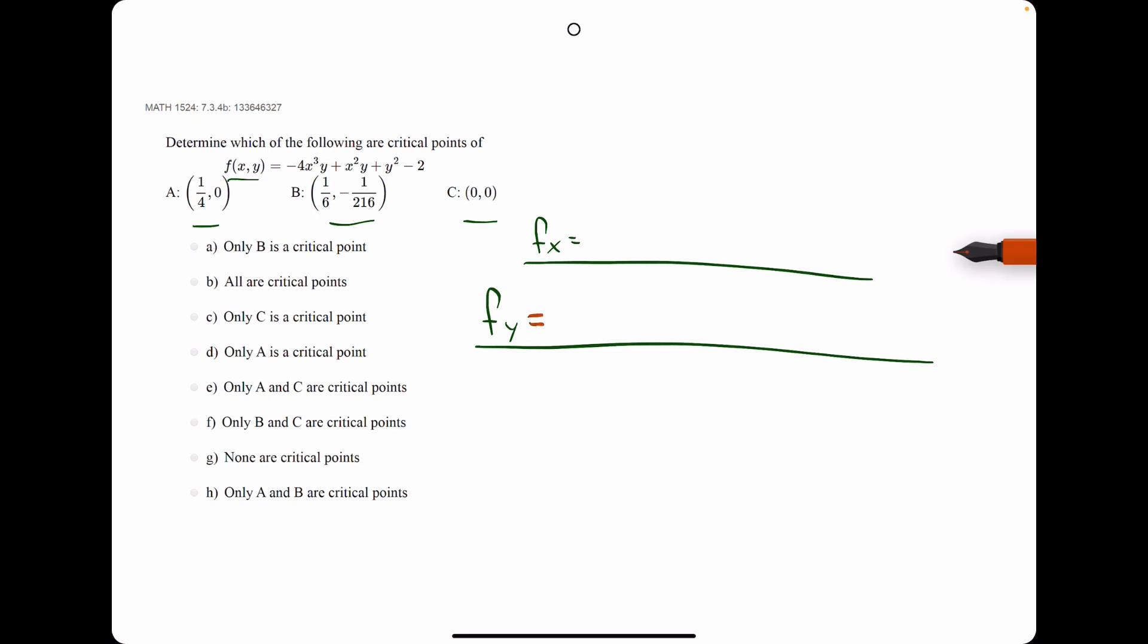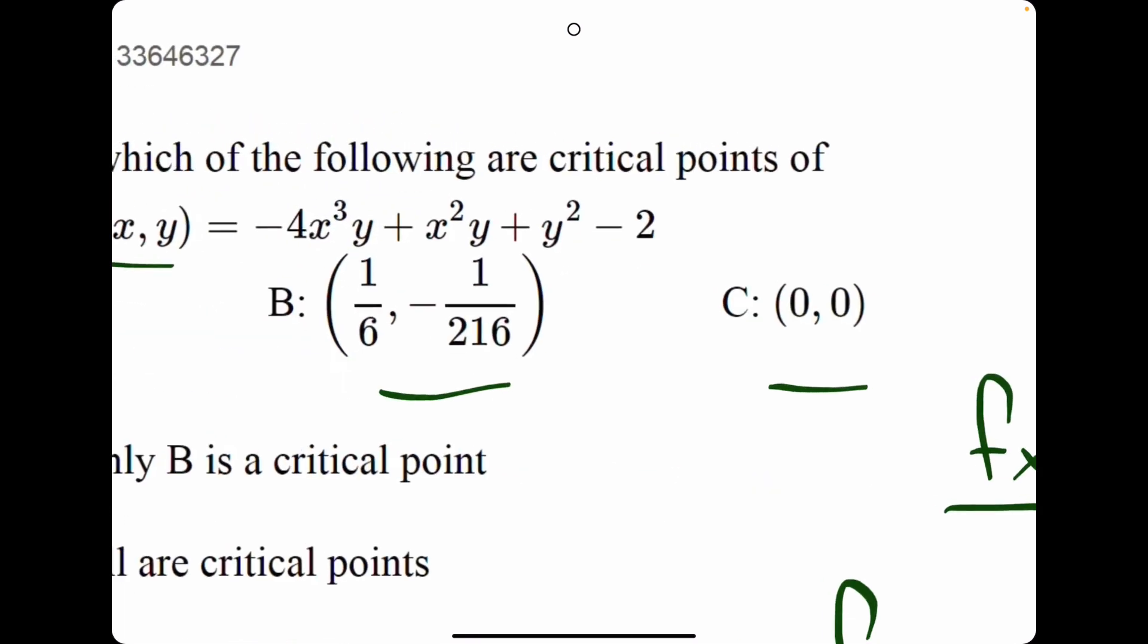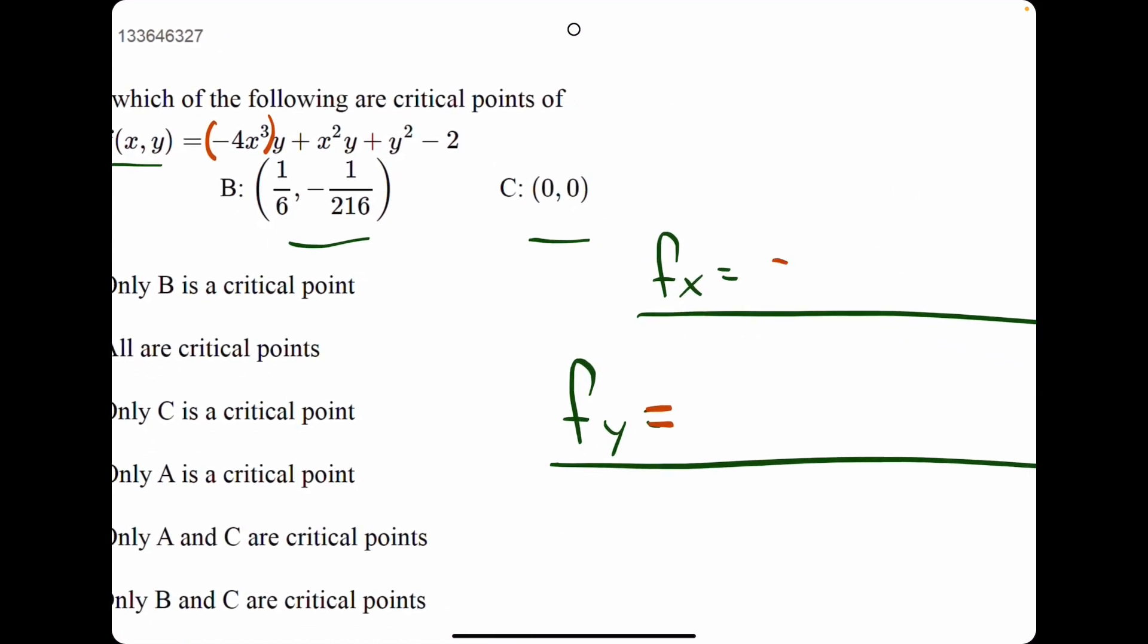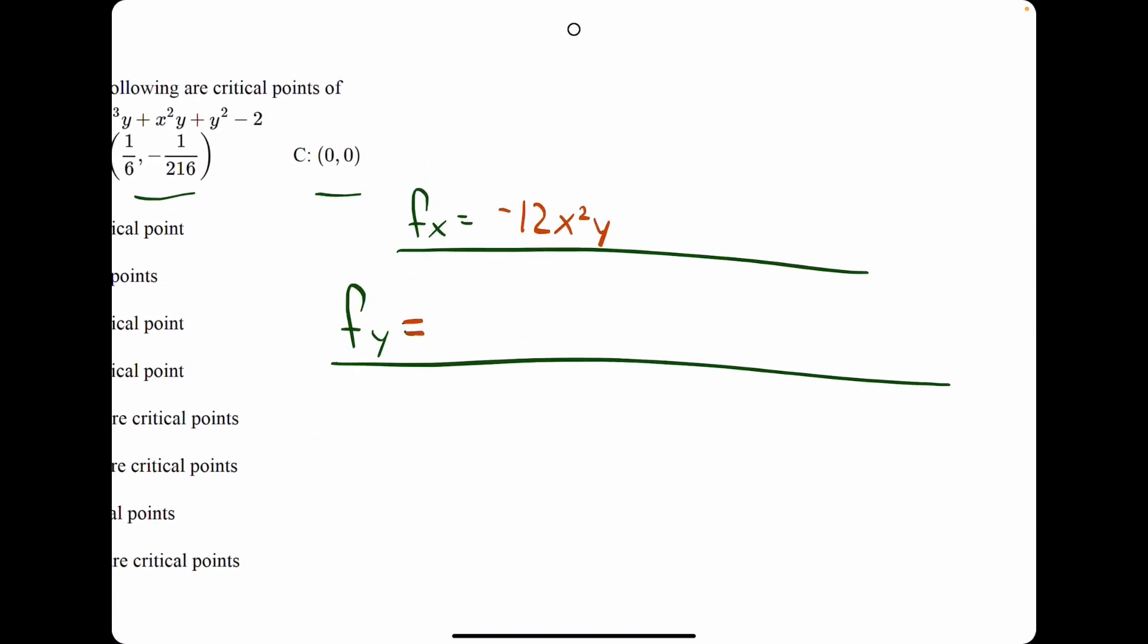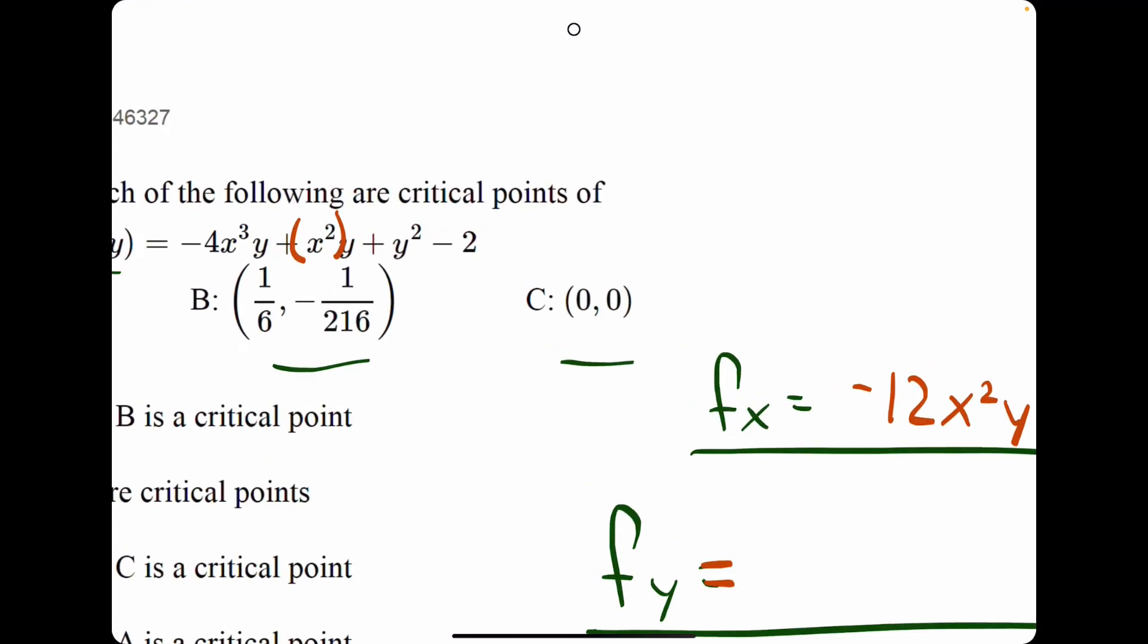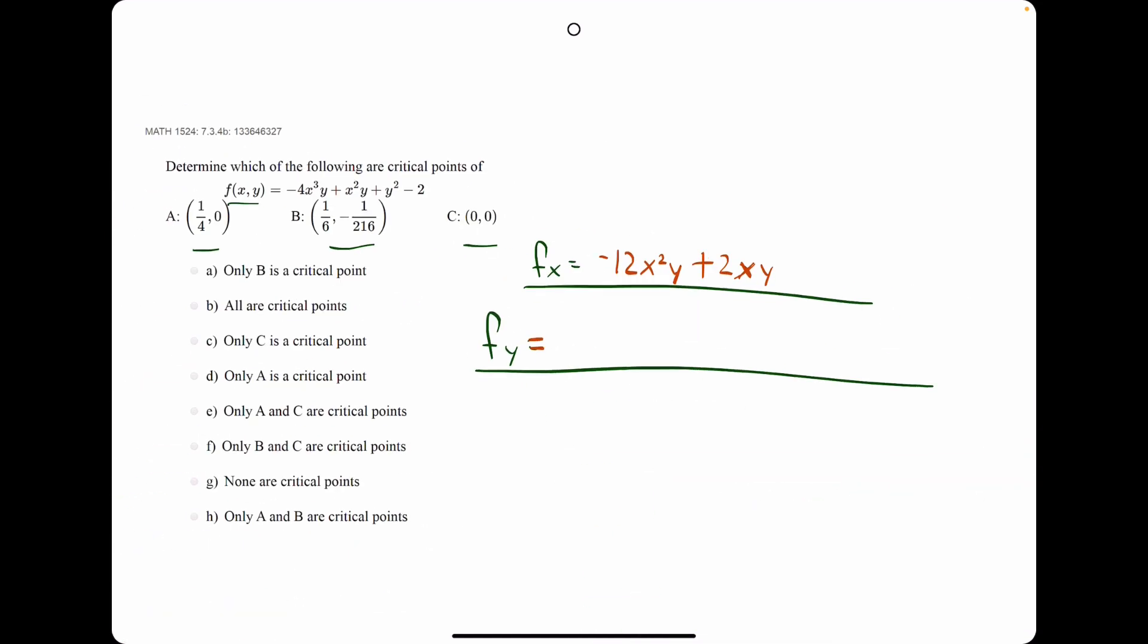Let's give it a go. We need fx, the derivative with respect to x. So, negative 4x cubed would go to minus 12x squared, the y would stay attached, the x squared would go to 2x, and again the y would stay multiplied since it was multiplied from the start, and then this lone y squared would be treated as a constant, so its derivative would be zero with respect to x. And then the minus 2 would go to zero as well.